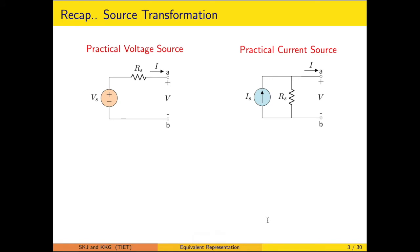We have also gone through source transformation, where a practical voltage source is translated into a practical current source, or vice versa. A practical voltage source is represented by a voltage source with a series resistance, whereas a practical current source is represented as a current source with a parallel resistance.